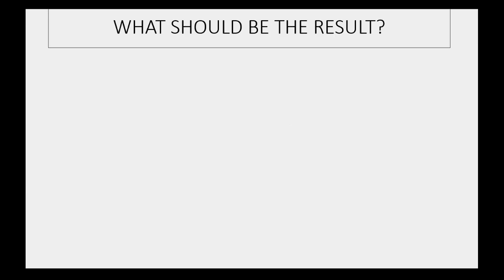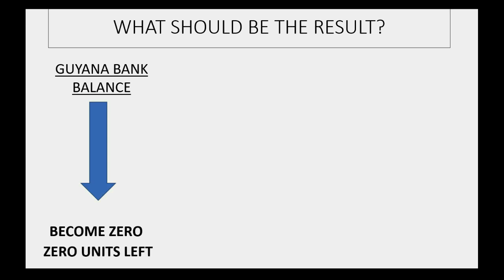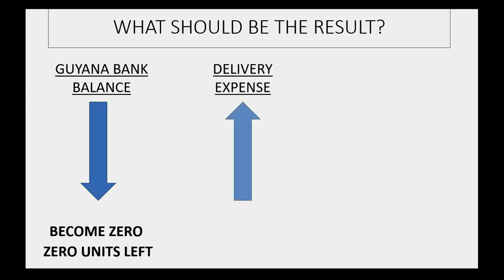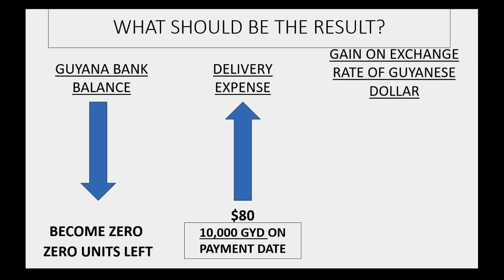What should be the result? The Guyana bank balance should go down to zero — there should be zero units left in the account. The delivery expense should appear on the trial balance increased by $80, because that's really the value of what you paid for the service at the moment you paid it. Even though you paid $10,000 Guyanese dollars, it was worth $80 of delivery at the moment you paid it. And the gain on the exchange of the Guyana dollars should increase by $15, bringing it up to what it was when we did it properly in the prior video.